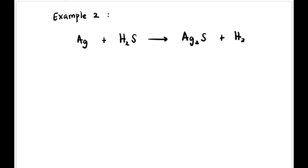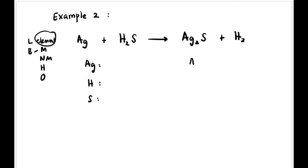Moving on to the next example: Ag + H₂S → Ag₂S + H₂. Remember lb mnm ho. List down all the elements first on both sides of the equation — we have Ag (silver), H, and S (sulfur), all present on both left and right. On the left hand side there is one Ag, two H, and one S. On the right hand side there are two Ag, two H, and one S.